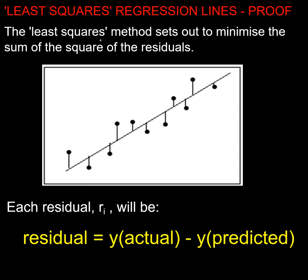The least squares method sets out to minimise the residuals — the sum of the squares of the residuals. What are the residuals? They're these distances here. I've got my regression line here in green, and my actual points here. These distances are called the residuals. Some of them are positive, some are negative. Rather than balancing off the positive and negative, we're going to square all of them, sum them up, and then minimise that.